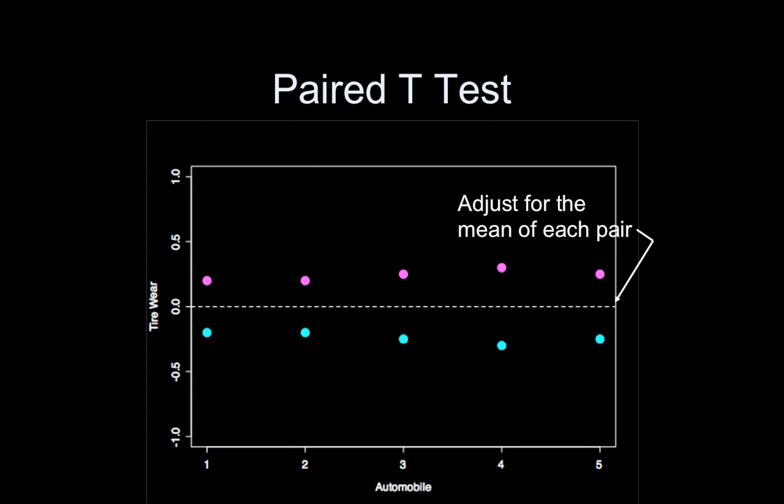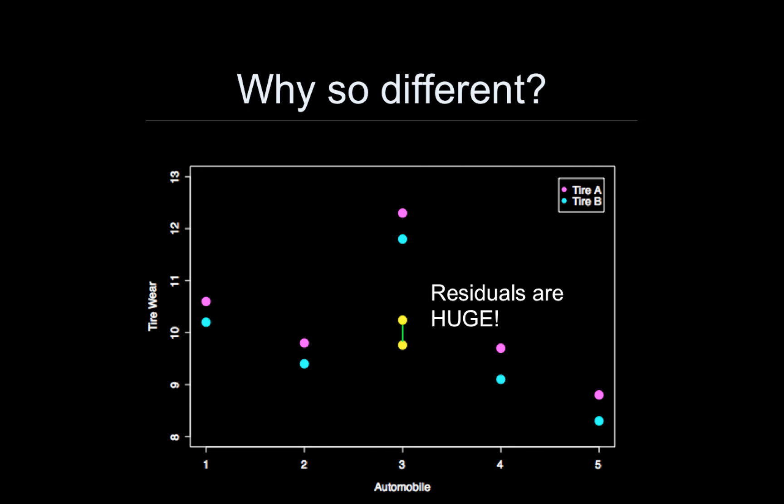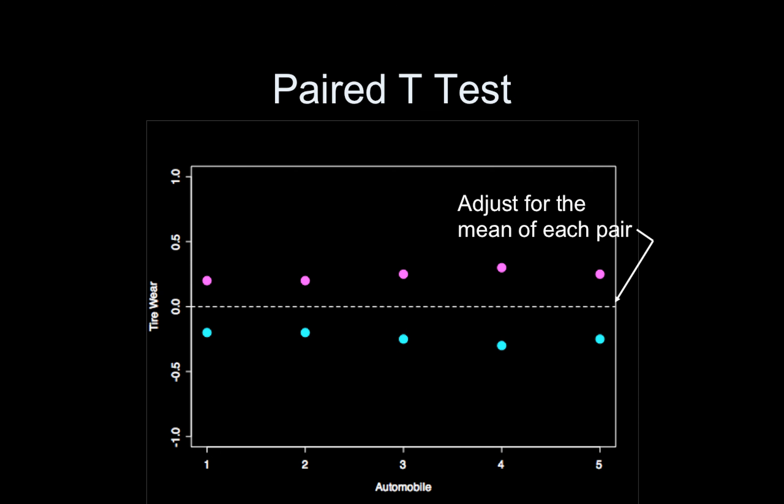What the paired t-test does is it takes the data. Notice the y-axis has really changed. The y-axis ranged between 8 to 13. What I'm going to do is mean center each pair of points. Now it only ranges between negative 1 to 1. You can see that we've centered the data for each subject. That's the first step of the paired t-test, is mean centering each subject's data. And then, effectively, all you do is you apply a two-sample t-test to these data. Now the mean of A is here, mean of B is here.